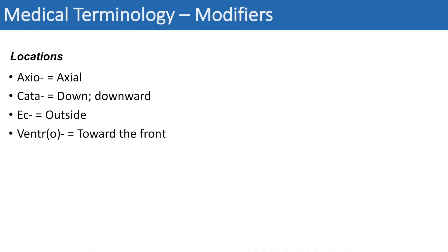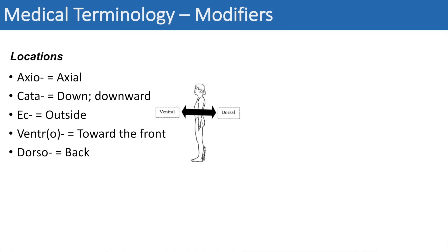The next one is vent or ventro, which means toward the front — so you can think of ventral, or the ventral surface of the body. And likewise, the opposite of that is dorsal, which refers to the back of the body. Here is a quick picture: ventral is toward the front, dorsal is toward the back.